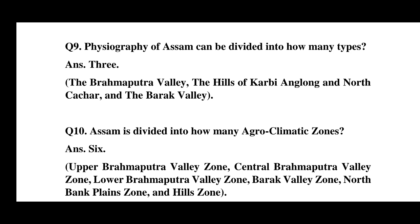The geography of Assam is divided into 3 types: the Brahmaputra Valley, the Barak Valley, and the Hills of Karbi Anglong and North Cachar. These are the three distinct physiographic regions of Assam.